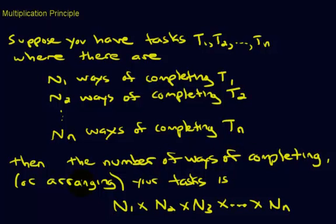Then the number of ways of completing or arranging your tasks is, you would multiply all of them together. So if you want to know how many ways you can complete all your tasks, figure out how many ways you can complete each task and then multiply them all together. Let's go over an example on completing tasks and finding out how many ways we can do that.